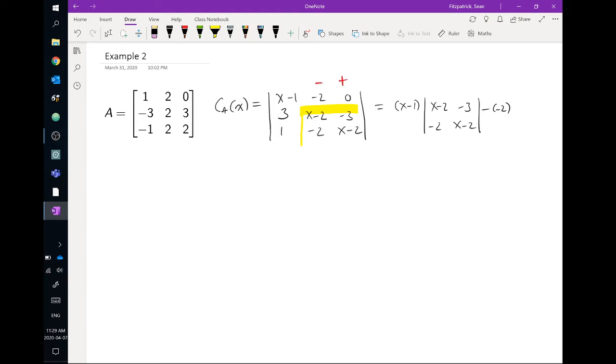So plus sign in front of the x minus 1, minus sign in front of the minus 2. And then we're going to do these two pieces here. That gives us the second 2 by 2 determinant. So 3, 1, minus 3, and x minus 2. Okay, so x minus 1 times, and we have x minus 2 squared, minus 6, and then we have plus 2 times 3 times x minus 2 plus 3.